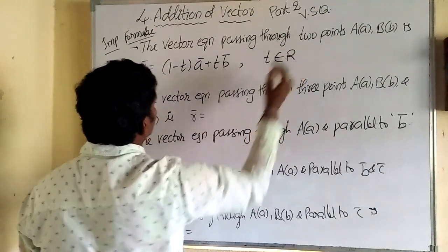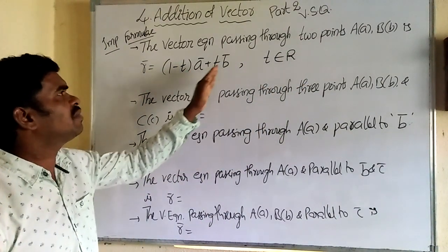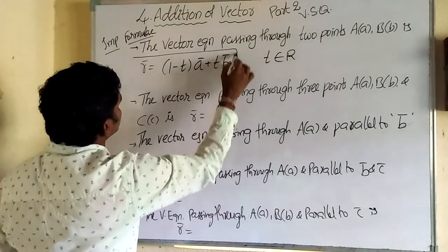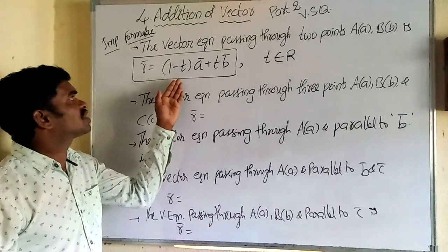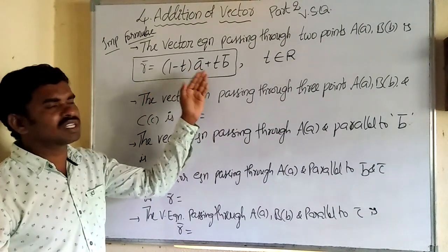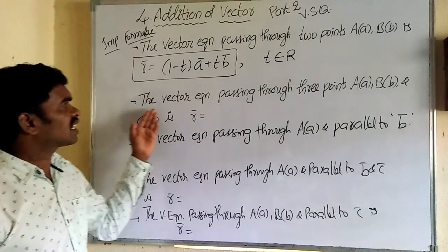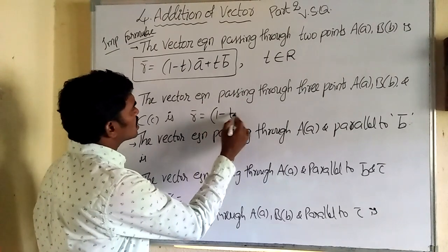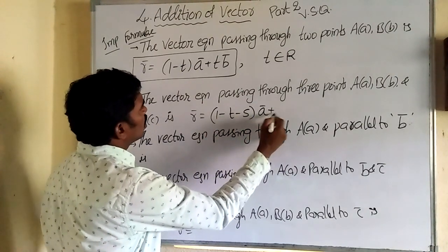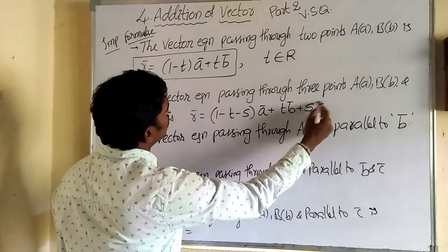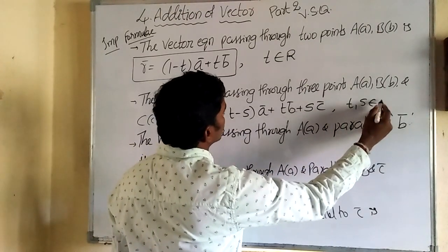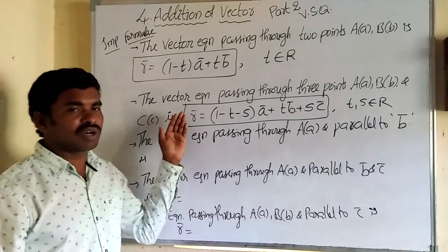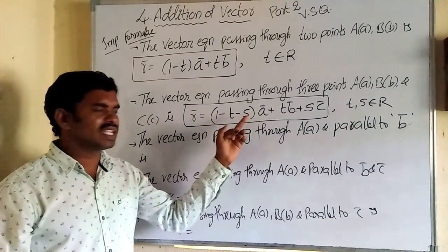Here t is a real number. The formula is r̄ = (1 − t)ā + tb̄. Second formula: the vector equation passing through three points A(a), B(b), and C(c) is r̄ = (1 − t − s)ā + tb̄ + sc̄, where t, s belong to real numbers.